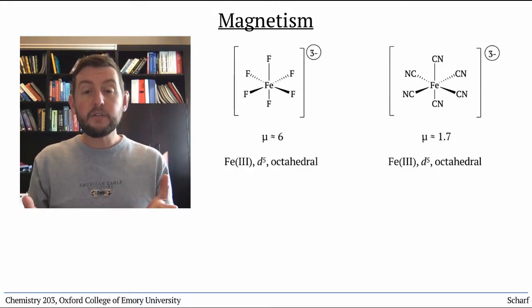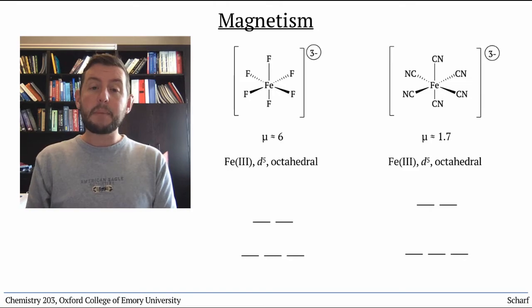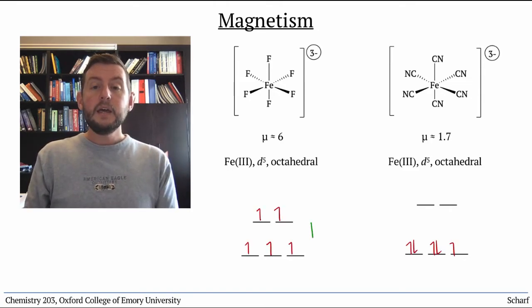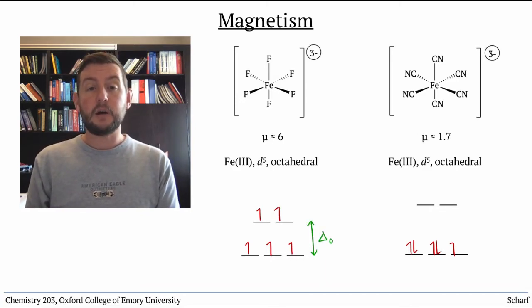Both of these are iron-3, d5, octahedral complexes, but their electrons populate their d orbitals differently. This is because delta-octahedral is different for these two complexes.